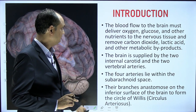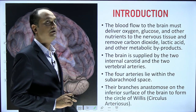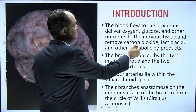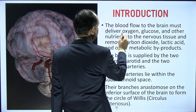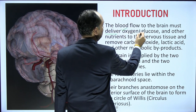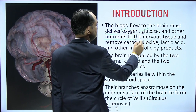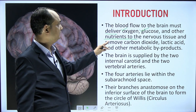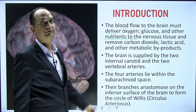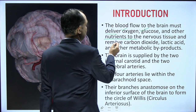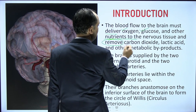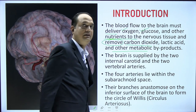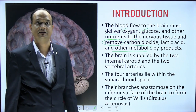Whenever you are talking about the blood supply of the brain, this blood is delivering oxygen, glucose, and other nutrients to the nervous tissue. Along with this delivery, it is also removing carbon dioxide, lactic acid, and other metabolite by-products from the nervous system.